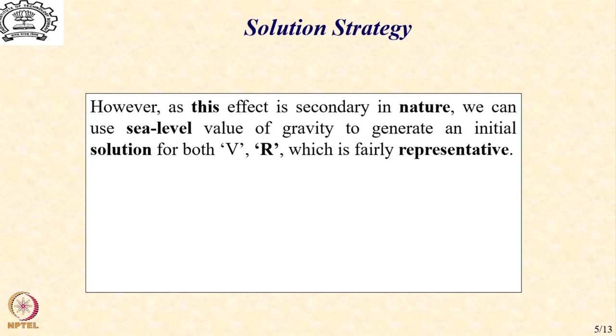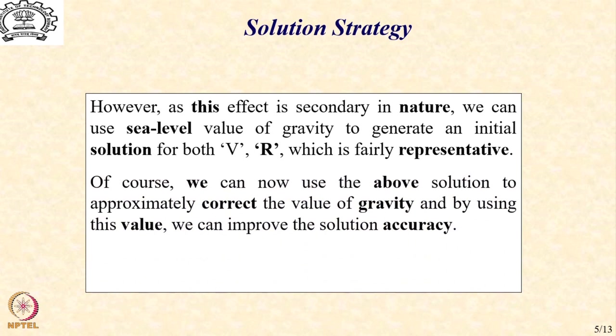And therefore, as a first approximation, we can use sea level value of gravity to generate an initial solution for both velocity and r, which is fairly representative as we will see through an example later. Of course, we can now use the above solution to approximately correct the value of gravity, and by using this corrected value, we can further improve the solution accuracy.